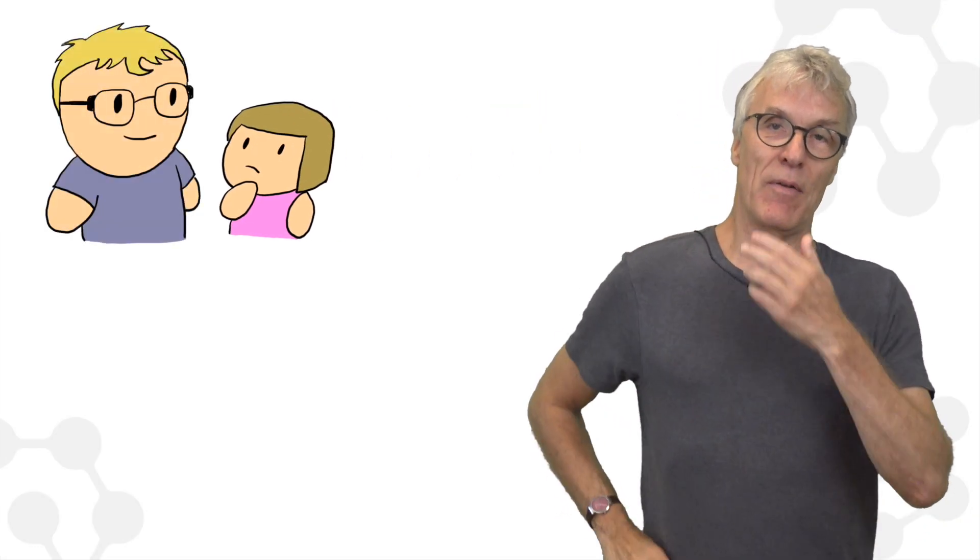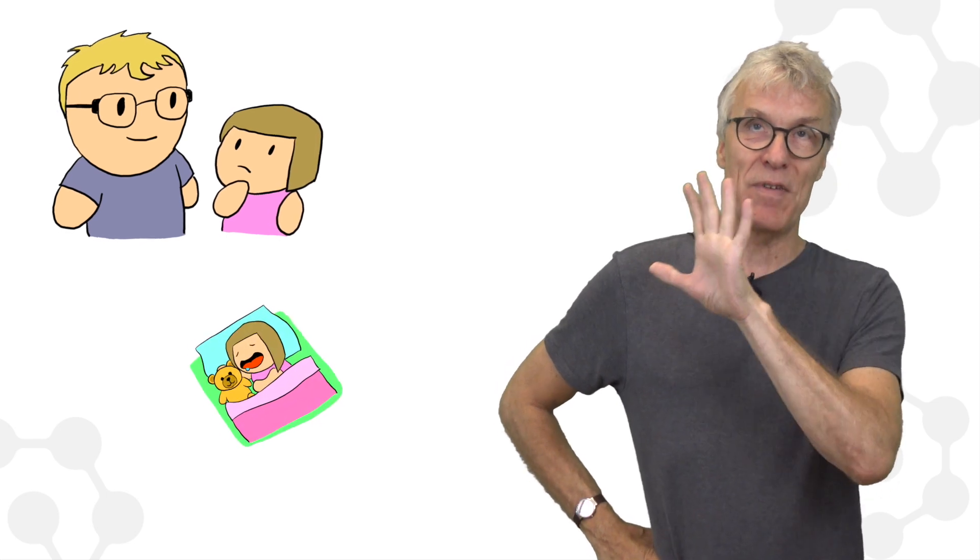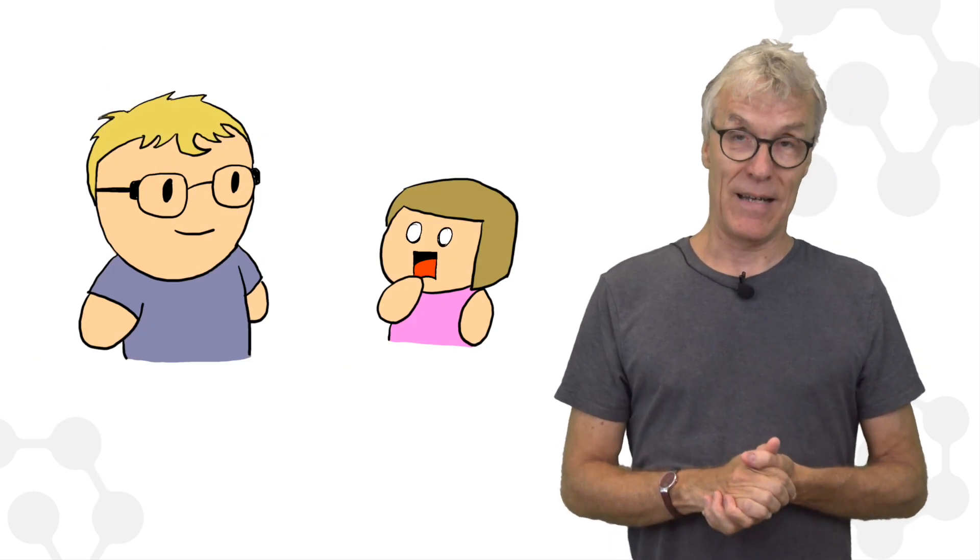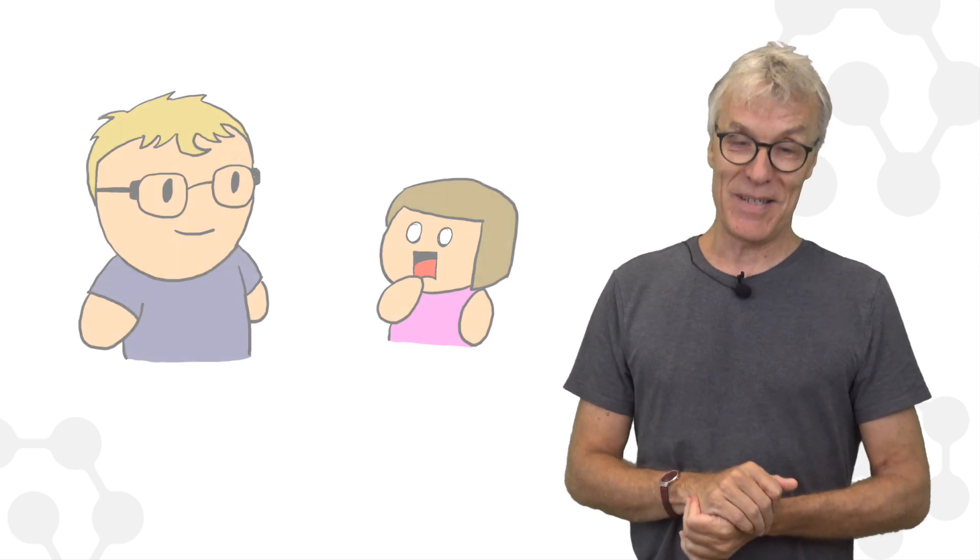When my daughter was six years old, she came to me one morning, and she had been thinking about something very deeply. And she said, how can I be sure that all of this is really happening, and it's not something I'm just dreaming? So this is a little bit like our situation with quantum mechanics, that we have some impressions coming from the microscopic world, but what is really happening, we actually really don't know. I was the evil father, so I said to her, yeah, maybe you're not even a little girl, but you're an old man having this dream. And she looked very disturbed by that idea. She actually never asked that question again to me.